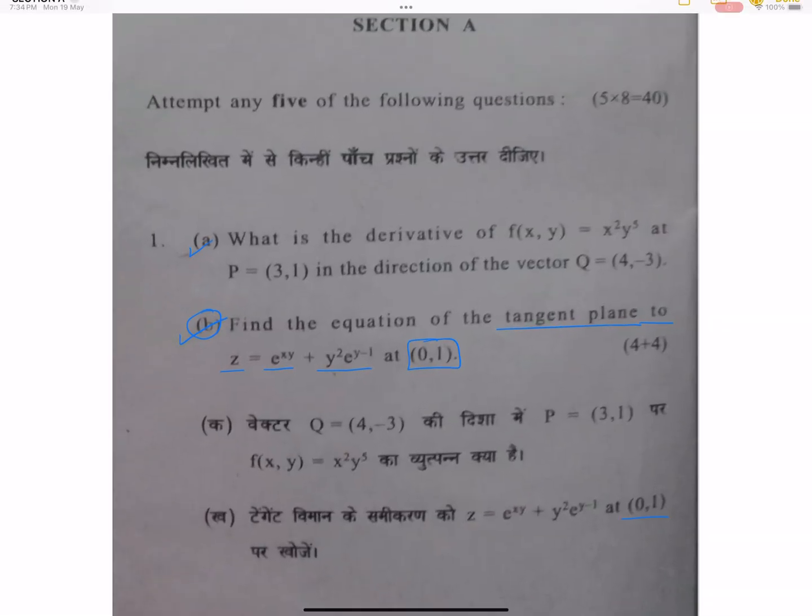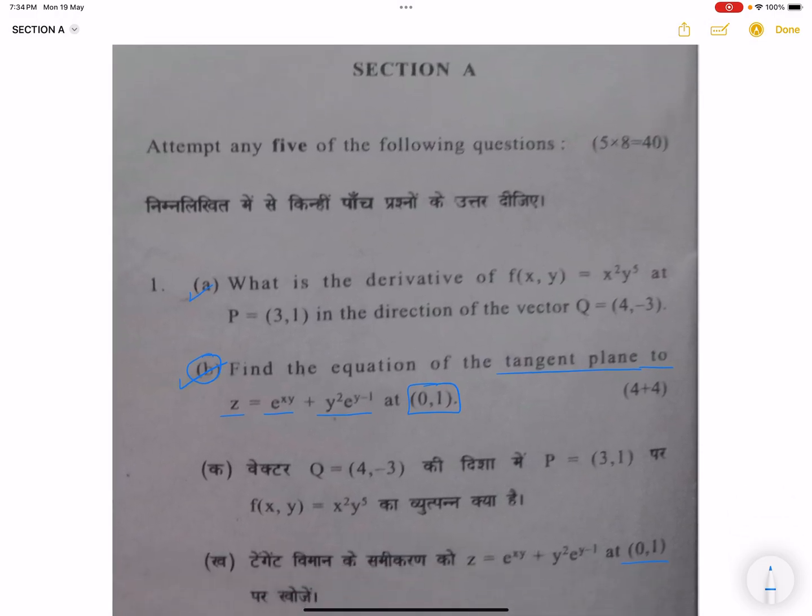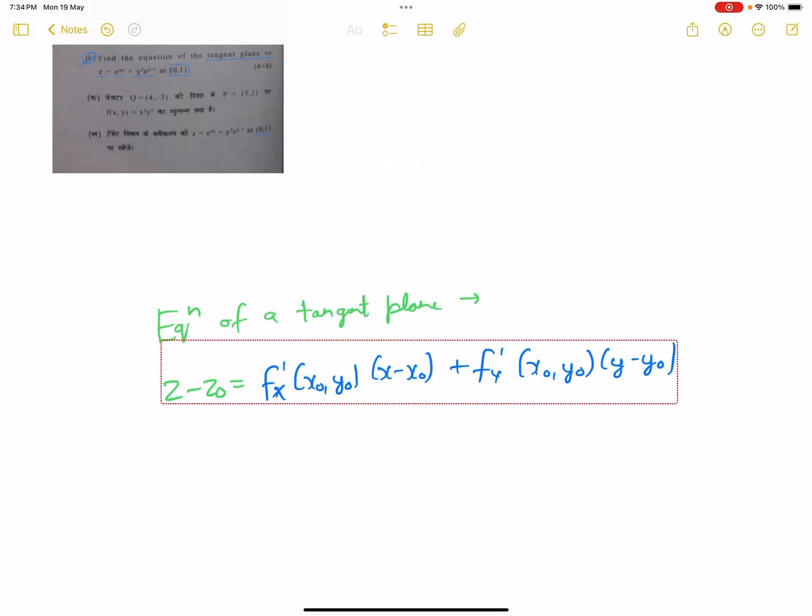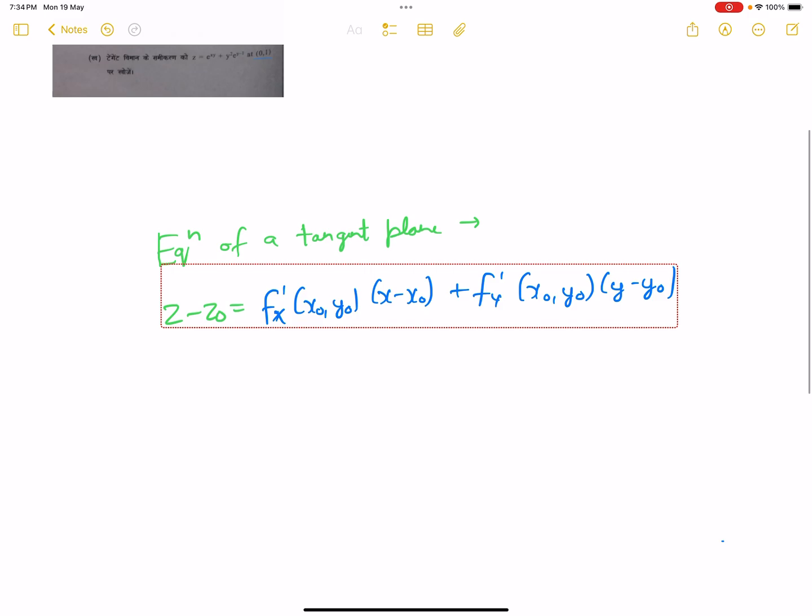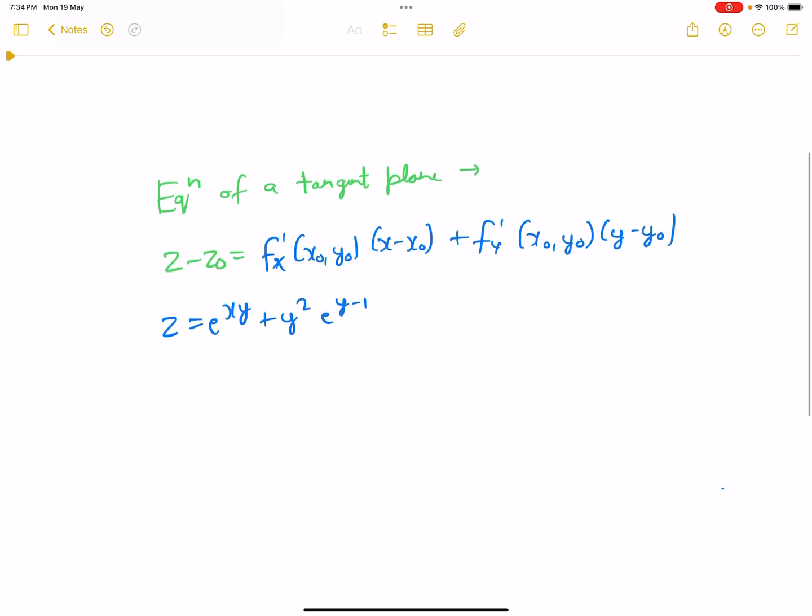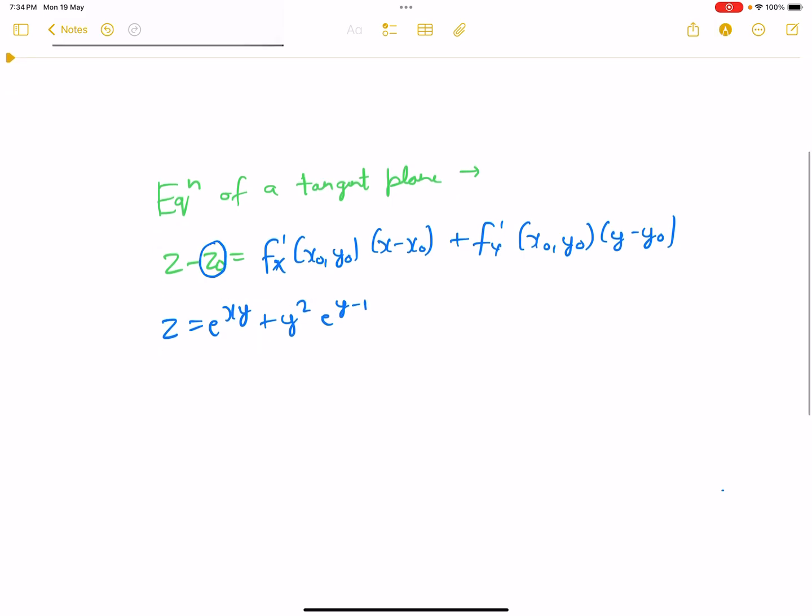So the function is z equals e to the power xy plus y square e to the power y minus 1 at (0,1). So z₀ is the value e to the power 0 plus 1 into e to the power 0, so this is 1 plus 1 equals 2.